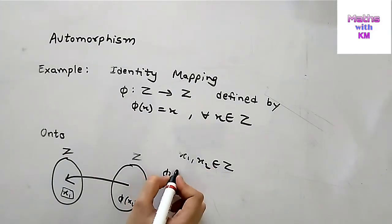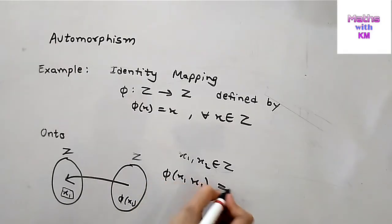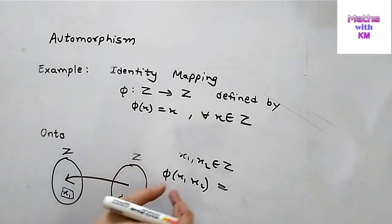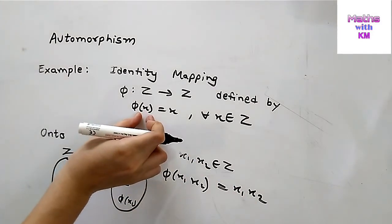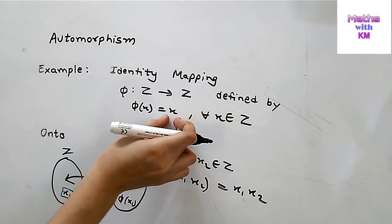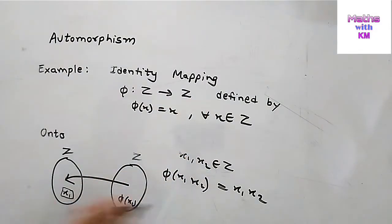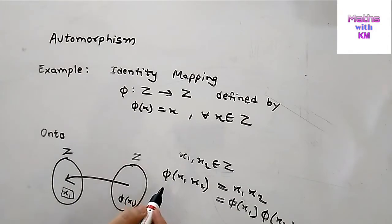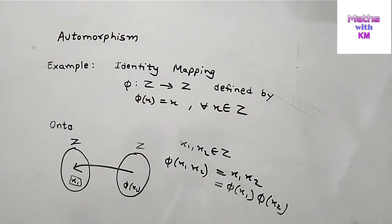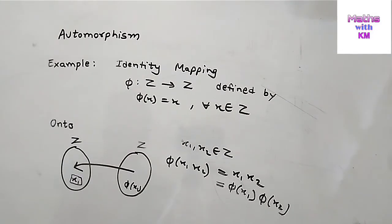For homomorphism, suppose x1 and x2 belong to Z. Consider phi of x1·x2. Since phi of x equals x, phi of x1·x2 equals x1·x2. Also, x1 can be written as phi of x1 and x2 can be written as phi of x2. Therefore phi of x1·x2 equals phi of x1 into phi of x2, so phi is a homomorphism. Since the identity mapping phi is one-to-one, onto, and a homomorphism, it is an automorphism.